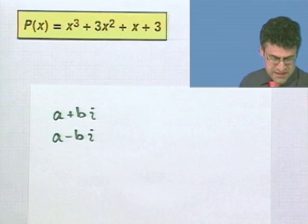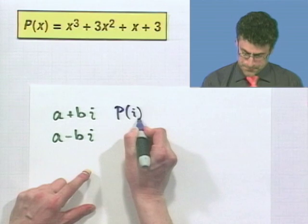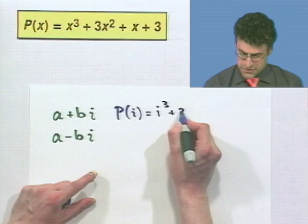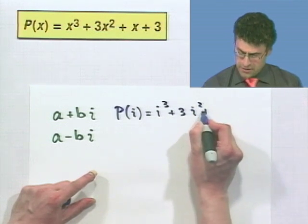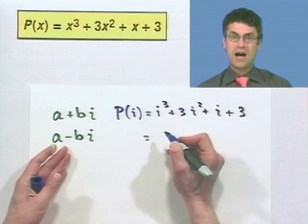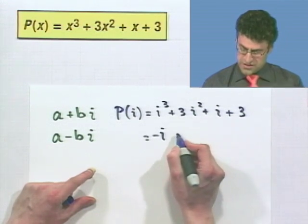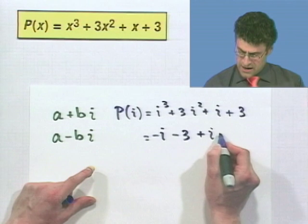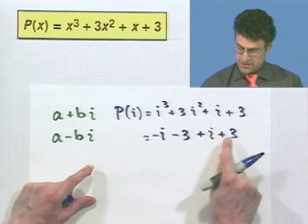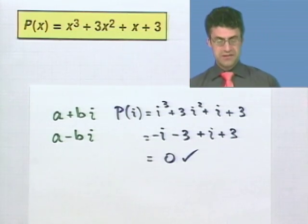Let's see, someone gave us that as a hint, that maybe i is a solution. So let's find P(i). That means wherever I see an x, I put an i. i cubed plus 3i squared plus i plus 3. Let's see what happens. i cubed, well, i times i is negative 1, and then I got an extra i, so that's negative i. And then i squared is just negative 1, so this is negative 3 plus i plus 3. And check it out. Negative i and i is 0. Negative 3 plus 3 is 0. This equals 0, it checks. So we do really have a zero to this, namely i.